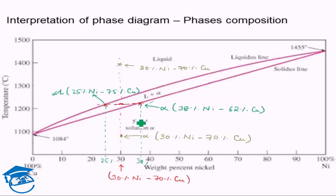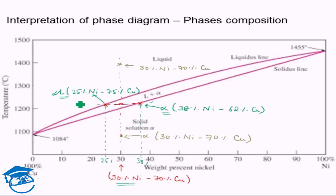Using this method you identified the composition of the two phases present. The initial alloy was 30% nickel, but once in the two-phase region the liquid loses nickel while the solid solution alpha gains nickel. So alpha gains nickel and the liquid loses it relatively speaking.